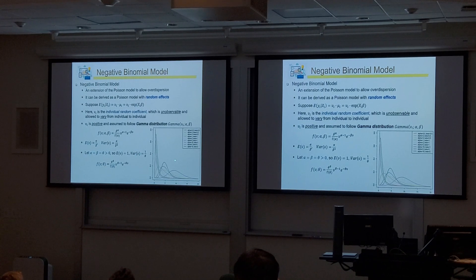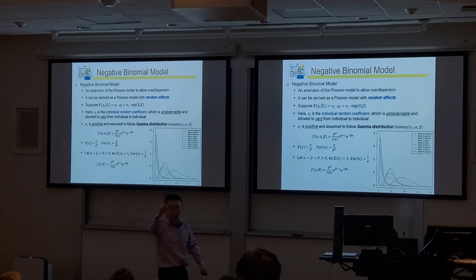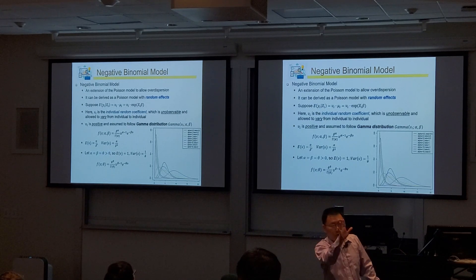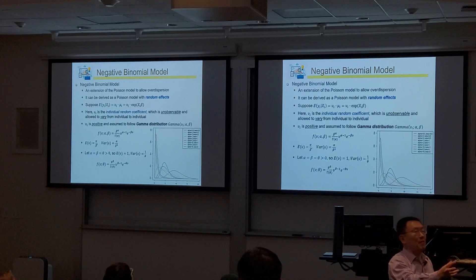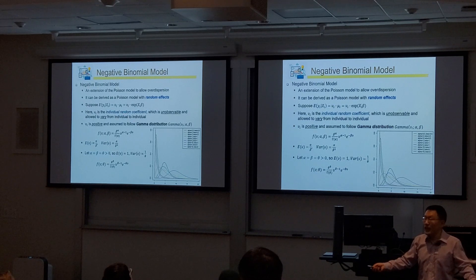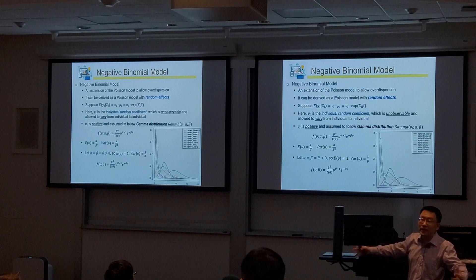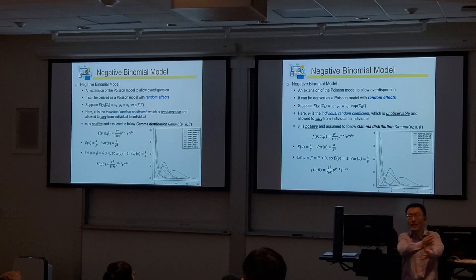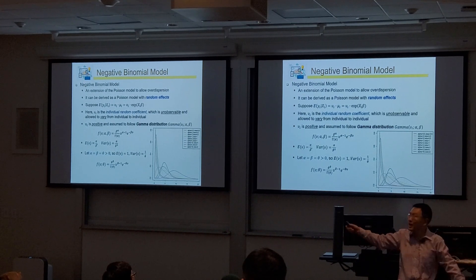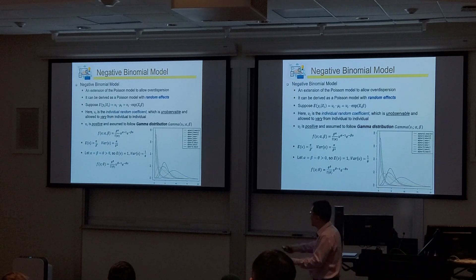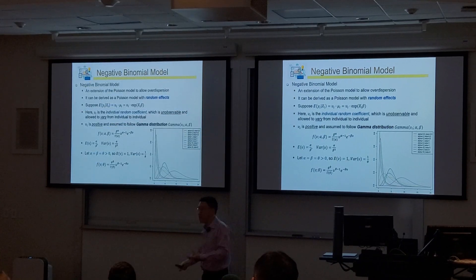When theta goes to positive infinity, 1/theta goes to zero, so the variance of mu goes to zero. The distribution concentrates at its mean, which is 1. This means all mu_i equal 1, and the model reduces to the Poisson. We are introducing the negative binomial to extend the basic Poisson and break the equidispersion constraint — allowing more variance in y than the expected value.